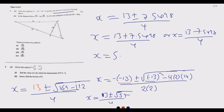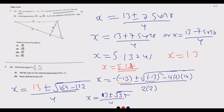Calculating each: 13 plus 7.5498 over 4 gives x approximately equal to 5.1374, which rounds to x equals 5.14 to two decimal places. And 13 minus 7.5498 over 4 gives x approximately equal to 1.3626, which rounds to x equals 1.36 to two decimal places. Those are the two values of x for question A.